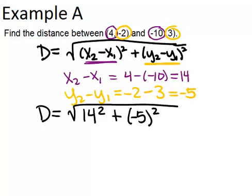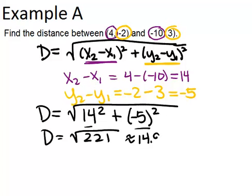Now to keep simplifying, you square both of these numbers and add them up. And you should get 221. So that means that the distance between those two points equals the square root of 221, which happens to be approximately 14.9 units.